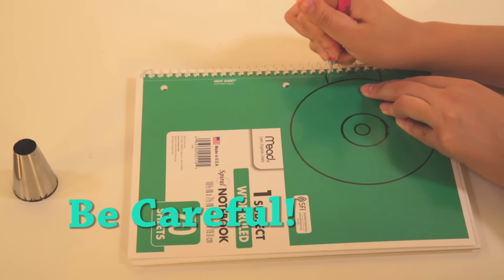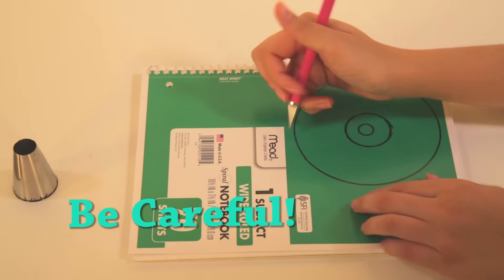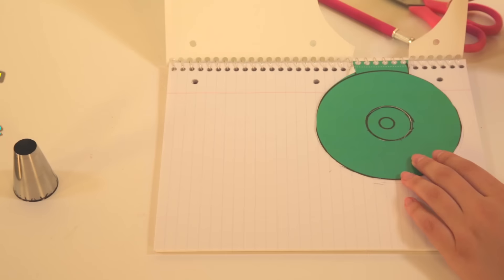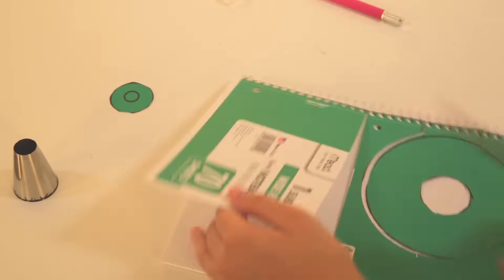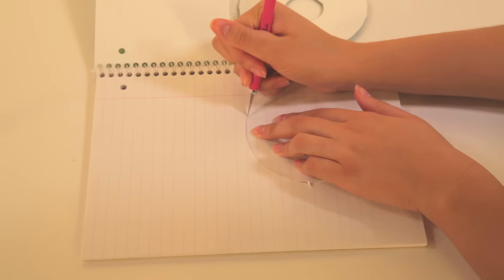Use your X-Acto knife or scissors and cut out both circles on the cover. Use your X-Acto knife to cut through the notebook pages. This part is a little bit hard, so ask a parent for help.